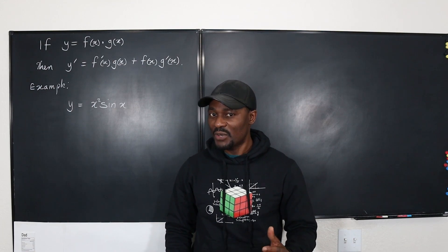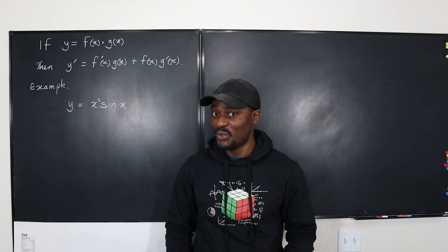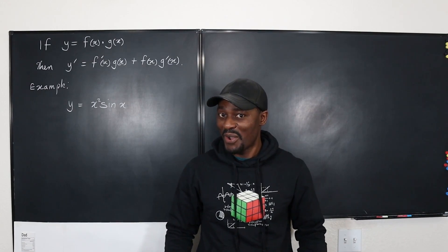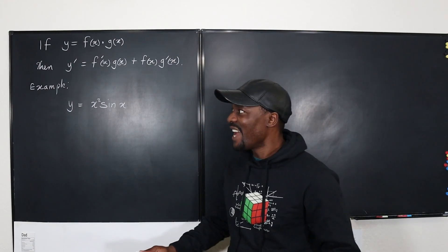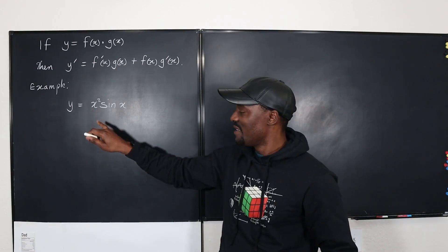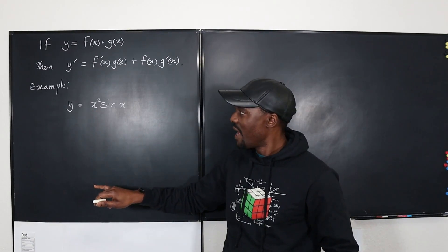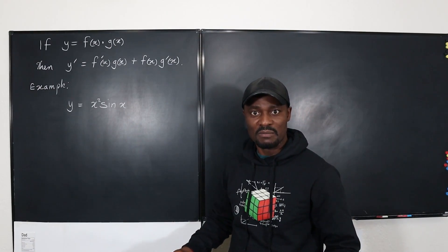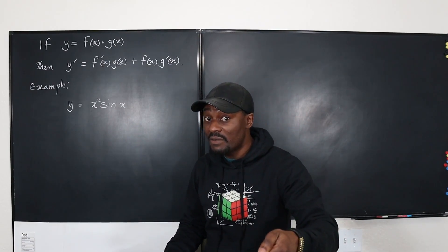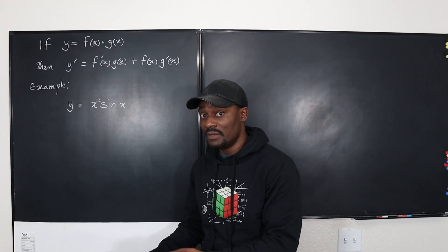Have you ever felt frustrated that you had to use the product rule to find the derivative of a function? Have you ever said, why can't I just find the derivative of x squared and find the derivative of sin x and just multiply them? Why is the derivative of a product not the product of the derivatives?